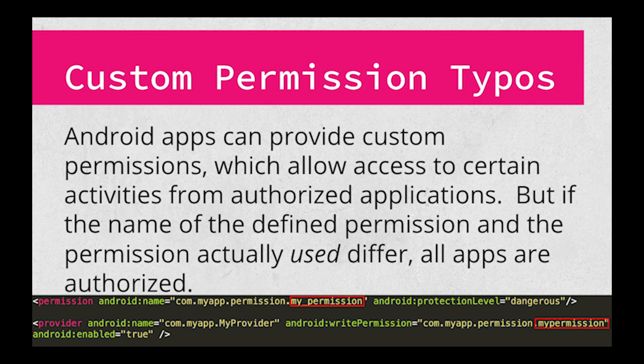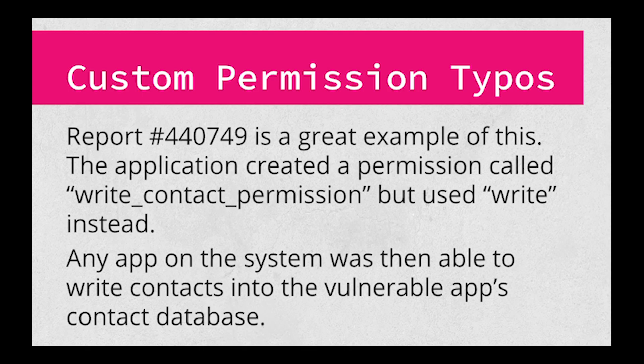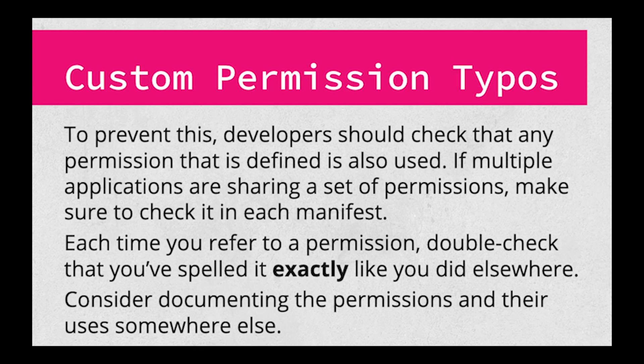Finally, we're going to discuss a weird but fairly common bug: mismatches in the names of custom permissions. One app can allow other apps access to certain functionality if they have a specific custom permission enabled. However, there's a big issue: the app uses one name when creating the permission and another for checking it — it would fail silently and allow all other apps on the system to use that function. This commonly occurs when developers mistype a permission name. Report 440749 is a great example: the application defined a permission with the name WriteContacts, but the activity using it called it Write instead. Because the Write permission wasn't known to the system, there was no restriction on any other app giving itself that permission and writing arbitrary contacts into a user's database. To prevent this, make sure the defined permissions are actually in use, double-check your names any time you're referring to a permission, or consider documenting them separately with where they are defined and where they are used.